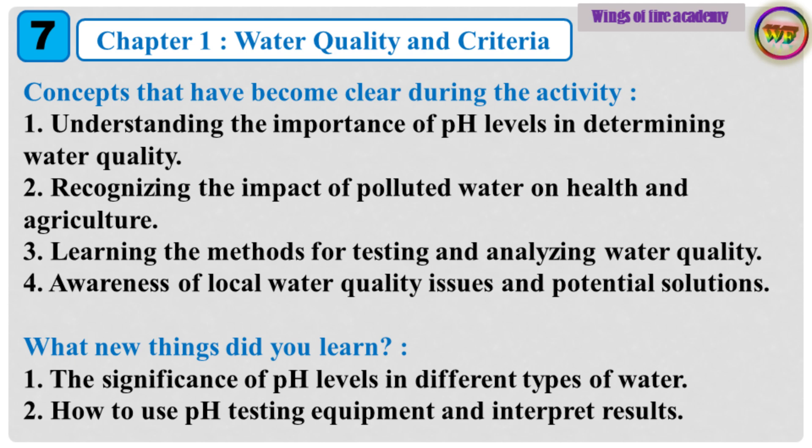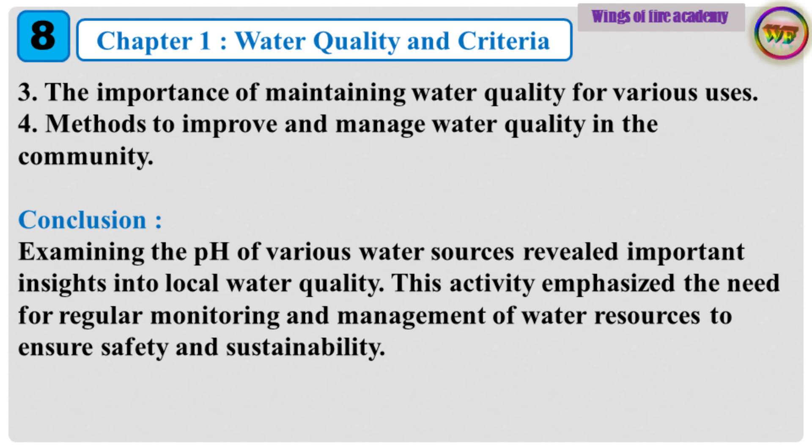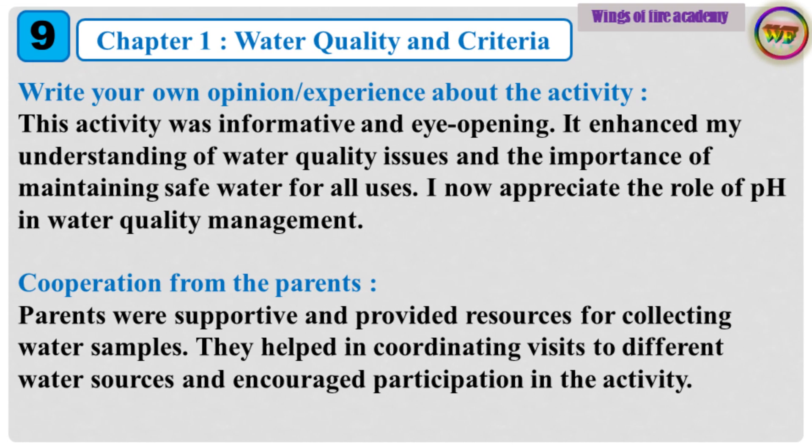What new things did you learn? 1. The significance of pH levels in different types of water. 2. How to use pH testing equipment and interpret results. 3. The importance of maintaining water quality for various uses. 4. Methods to improve and manage water quality in the community. Examining the pH of various water sources revealed important insights into local water quality. This activity emphasized the need for regular monitoring and management of water resources to ensure safety and sustainability. This activity was informative and eye-opening. It enhanced my understanding of water quality issues and the importance of maintaining safe water for all uses. I now appreciate the role of pH in water quality management.